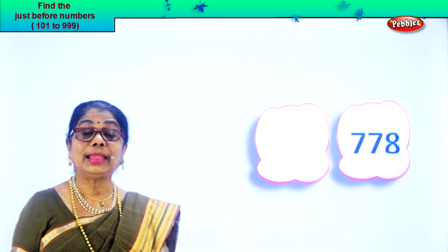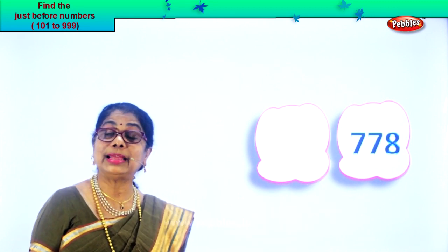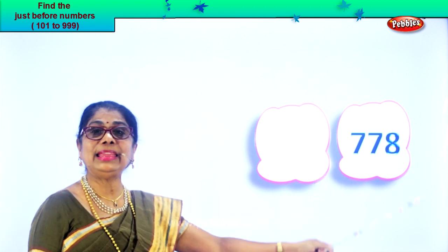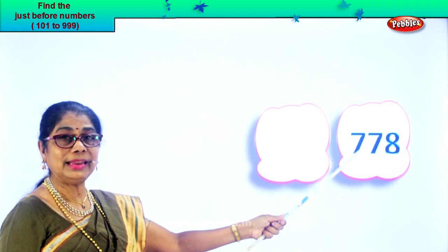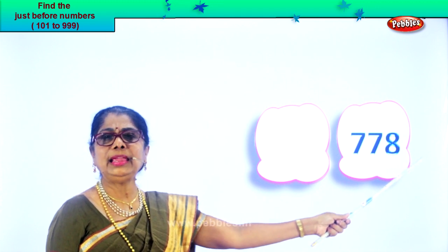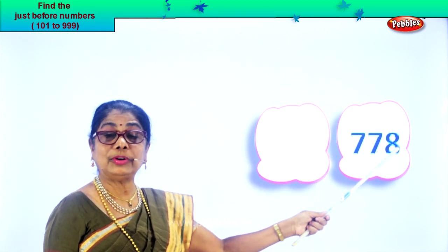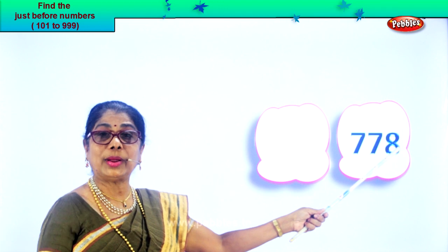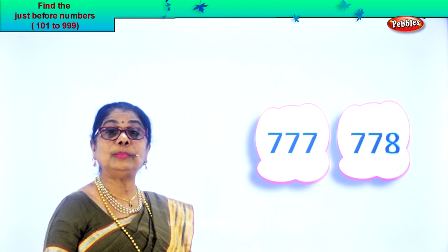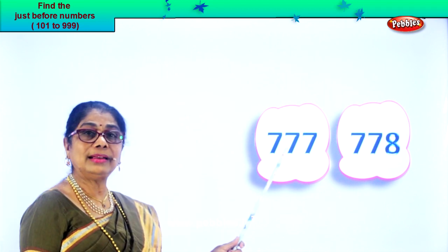Here we are. In the ones place you have eight, tens place seven, and hundreds place seven. Let's read the numeral: 778. Look at the last number — eight. Eight from the ones place: you minus one. One less than eight is seven. So one less will be 77. The number before, just before, will be 777.